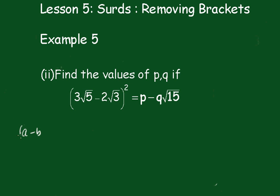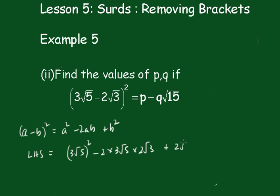Of course this is a square, so we know that (a - b)² = a² - 2ab + b². So this expression on the left hand side will be equal to (3√5)² - 2 times 3√5 times 2√3 plus (2√3)².